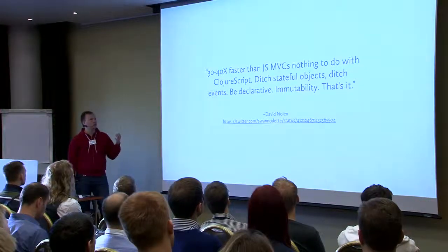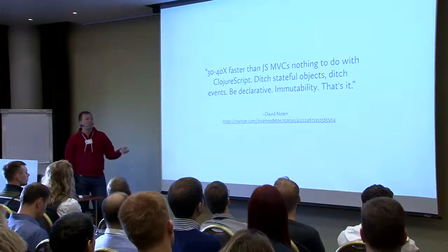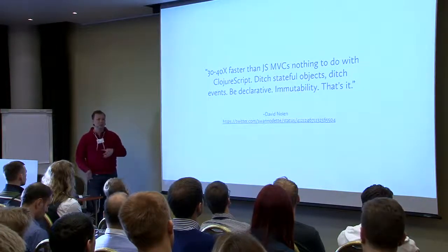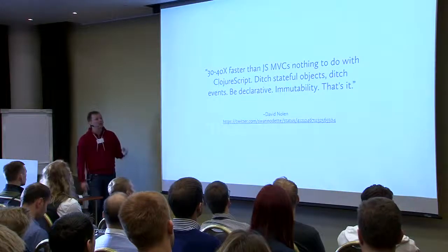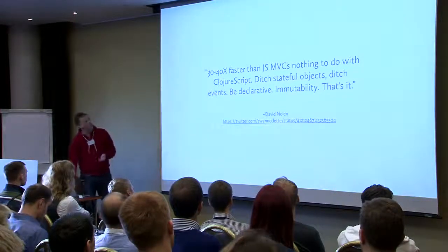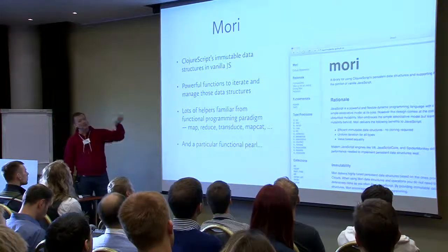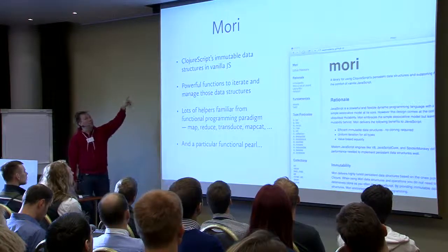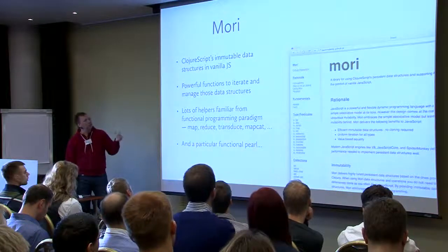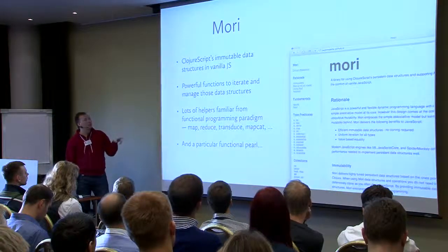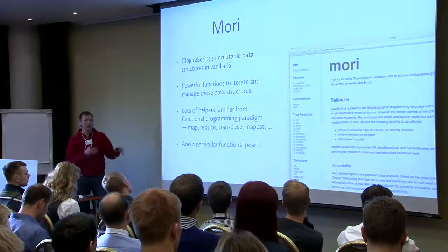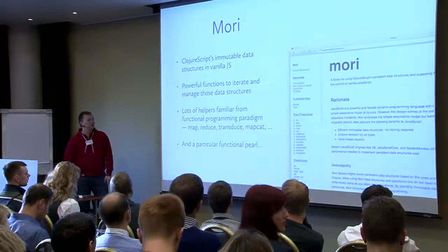Because our codebase was all written in JavaScript — about 40,000 lines of code — it wasn't feasible to move everything to ClojureScript. So I investigated how to use these concepts in regular JavaScript. I found that the same person who created OM extracted ClojureScript's immutable data structures into a library called Mori. You get the same powerful data structures — vectors, lists, hash maps — and lots of functions to iterate over them, manage structures, and helper functions from functional programming paradigms like map, reduce, transduce, et cetera.